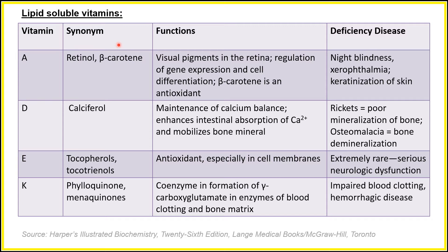These are the synonyms, functional aspects, and deficiency diseases of lipid-soluble vitamins. First, Vitamin A — it is also called retinol and beta-carotene. Its function is visual pigmentation in the retina, regulation of gene expression and cell differentiation, and beta-carotene is an antioxidant. Deficiency of Vitamin A causes night blindness, xerophthalmia, and keratinization of skin.